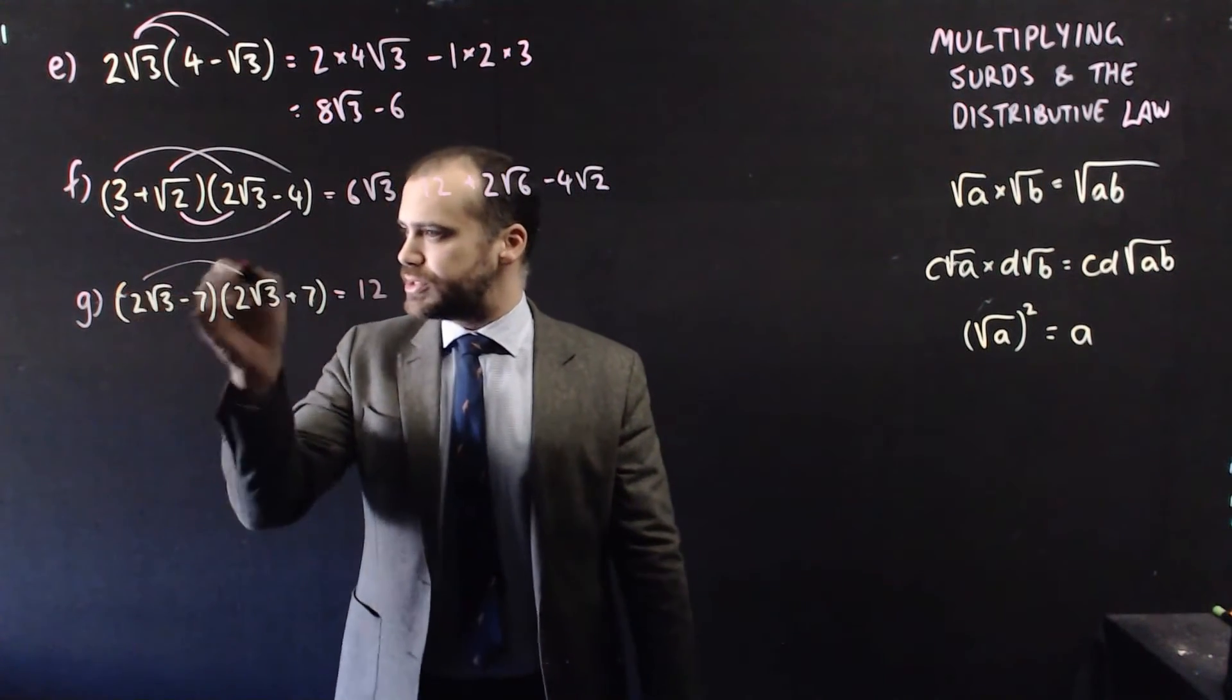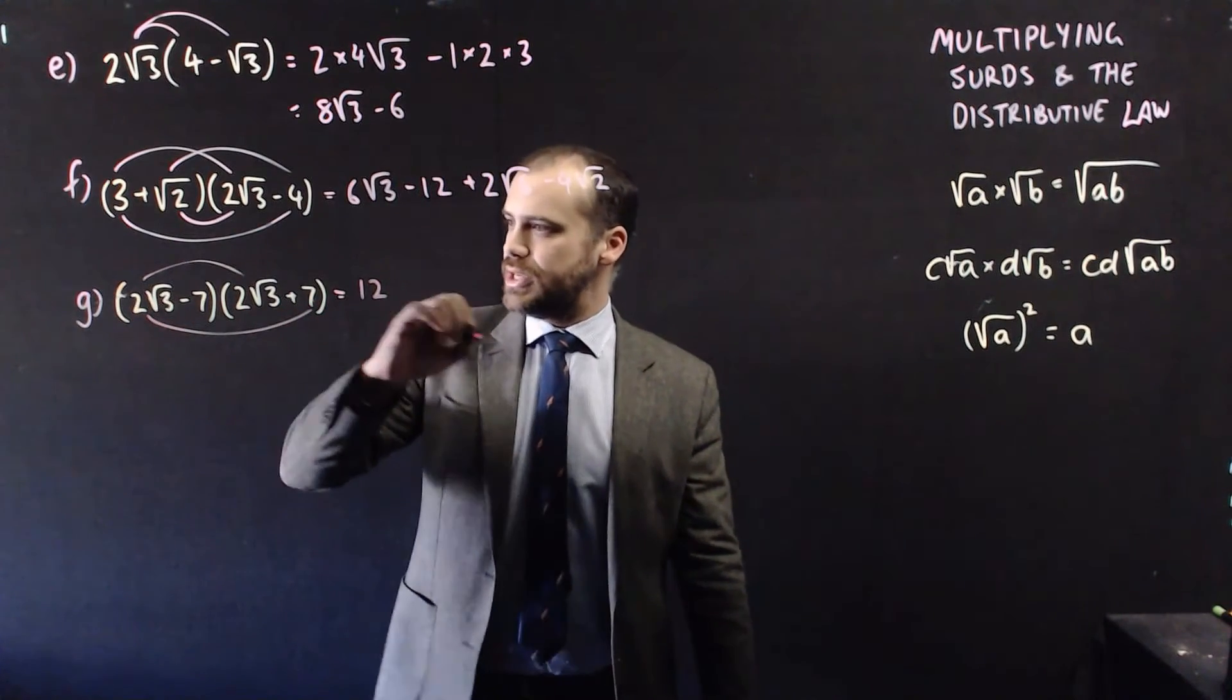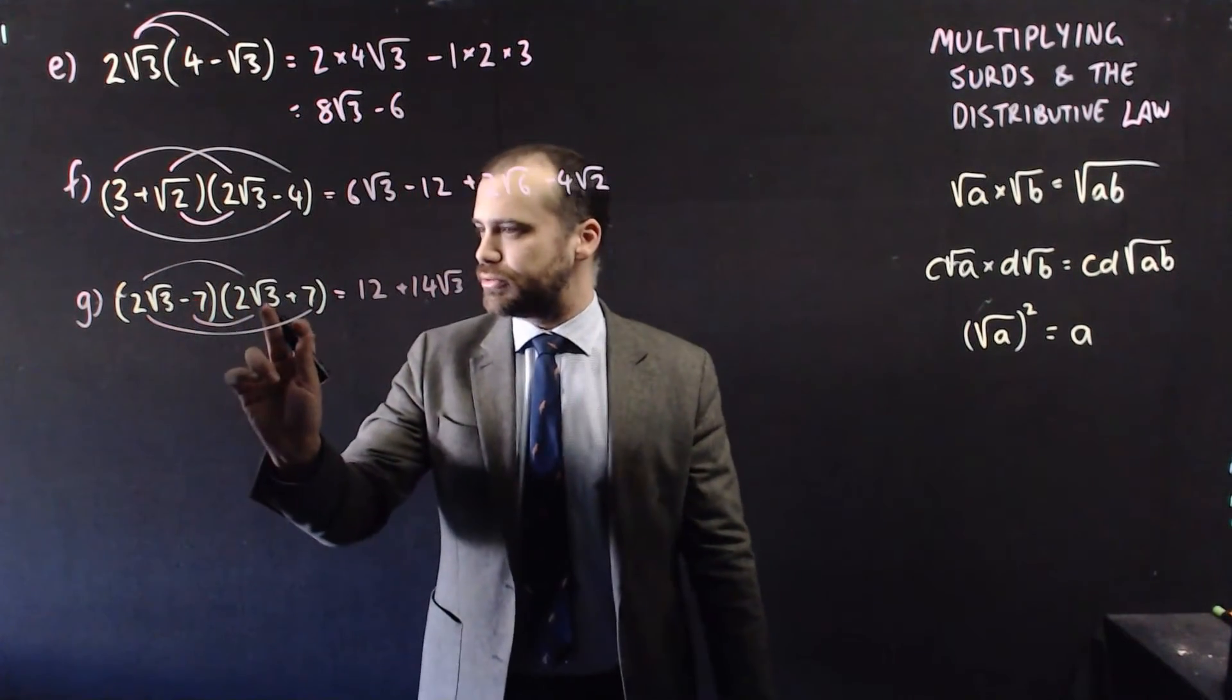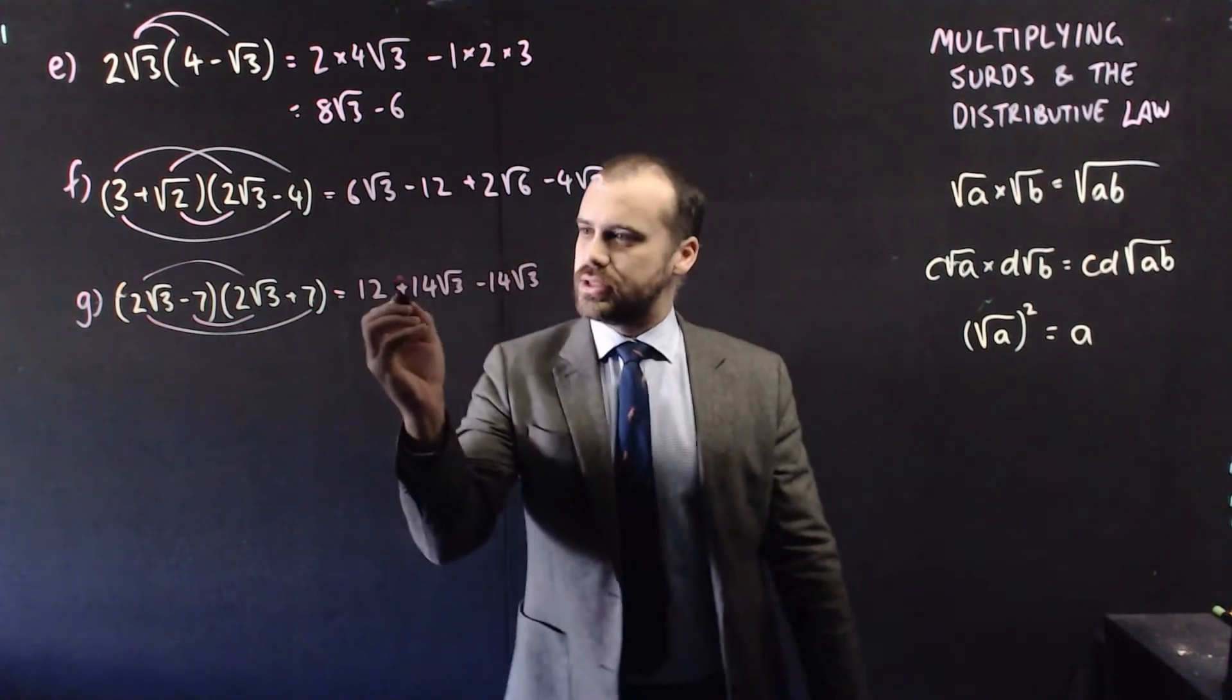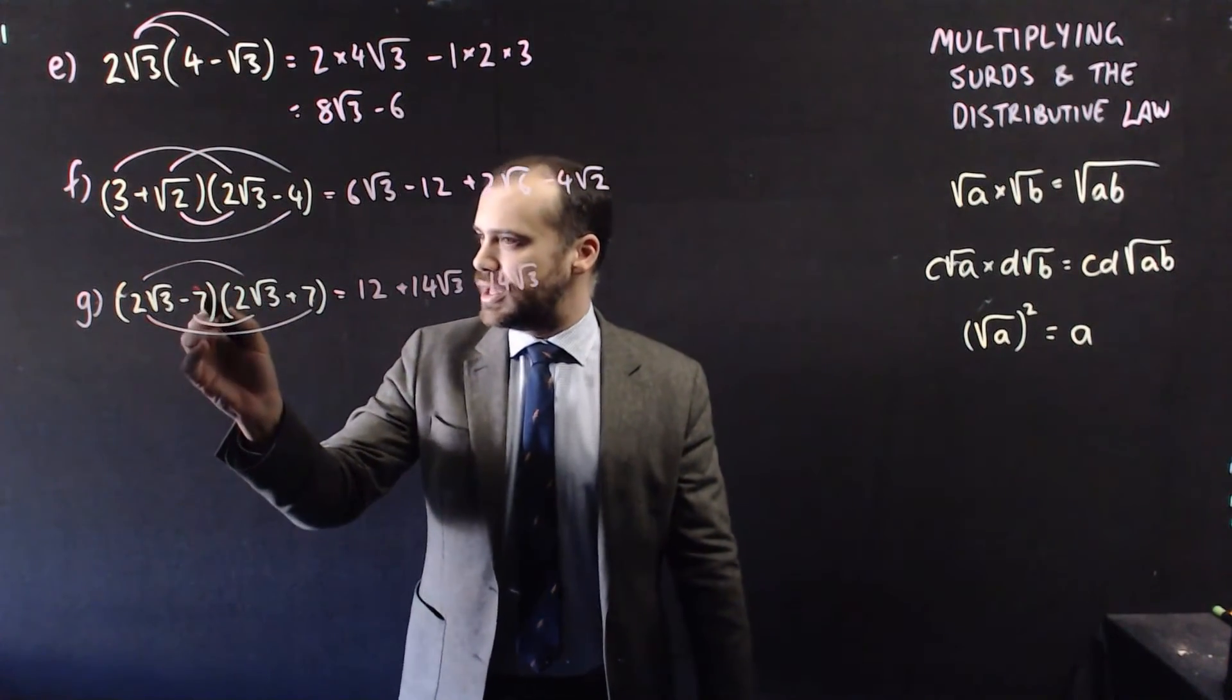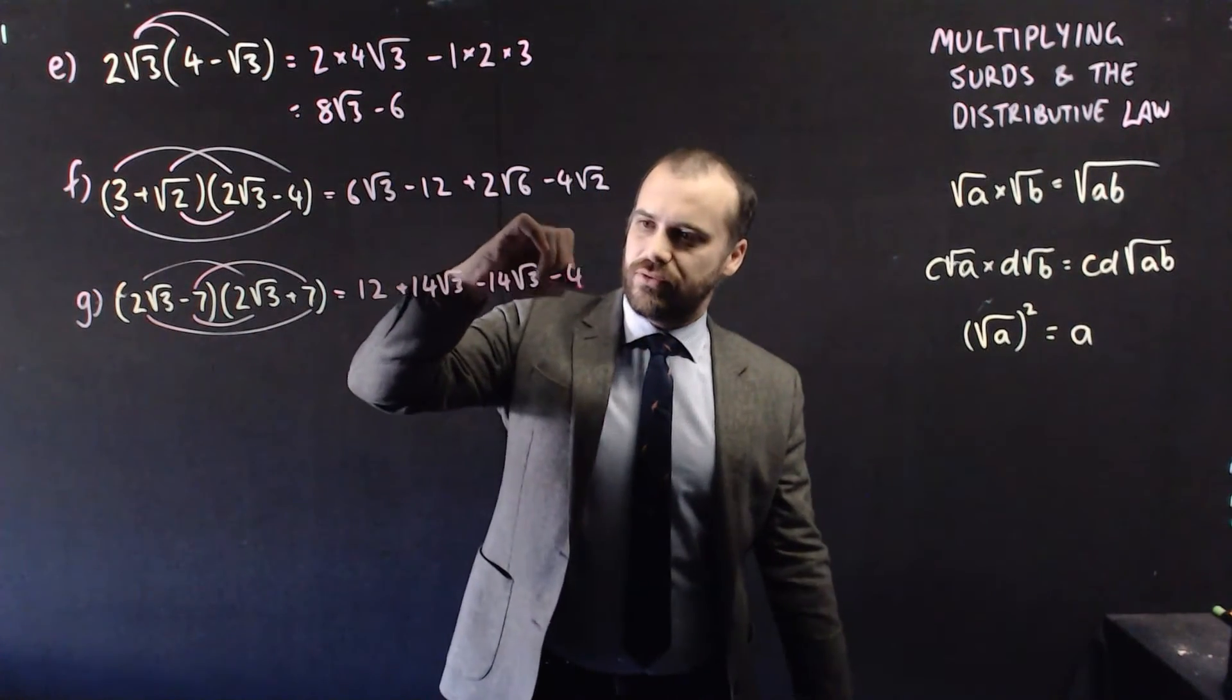Our first outer. 2 times 7 is 14, 14 root 3. Inner, 2 times negative 7 and of root 3. That's going to be negative 14 root 3. So these are going to cancel each other out. That's the special pattern we've got going on here. And then we have negative 7 times positive 7 is negative 49.